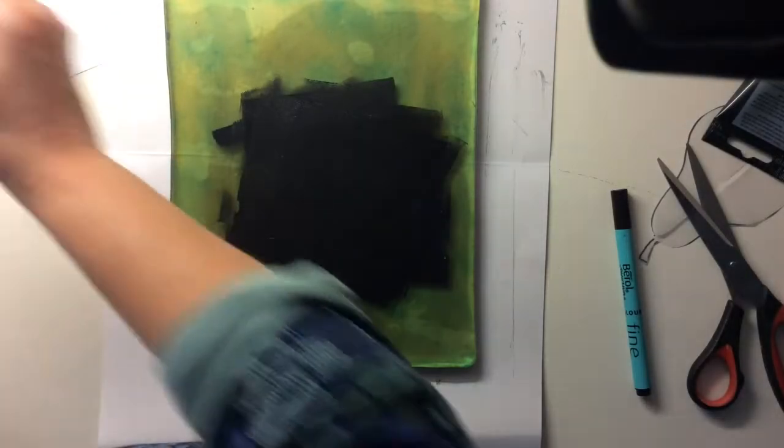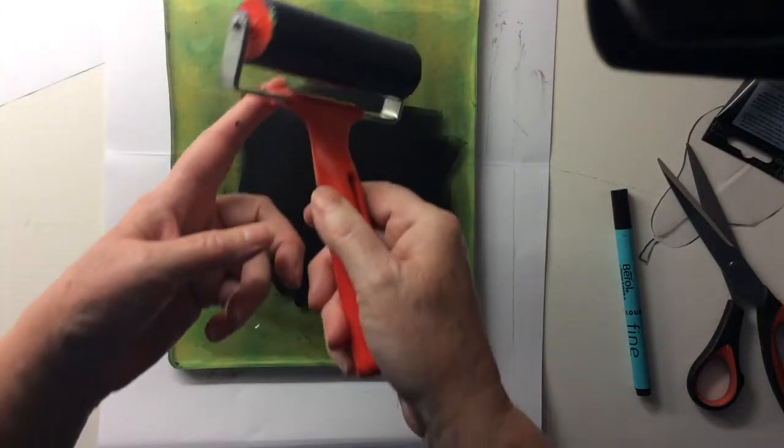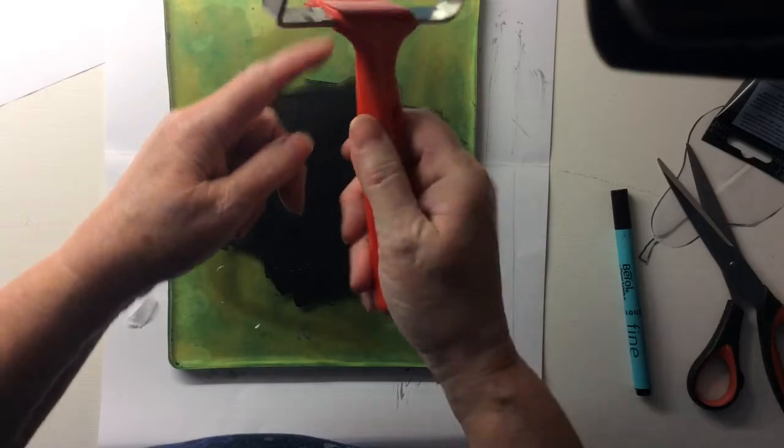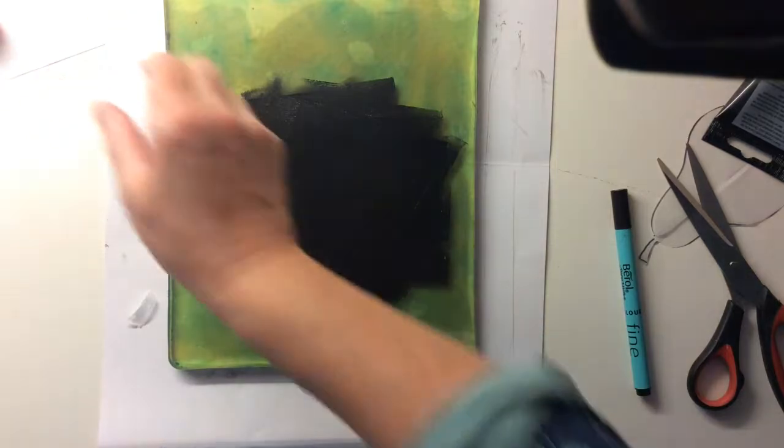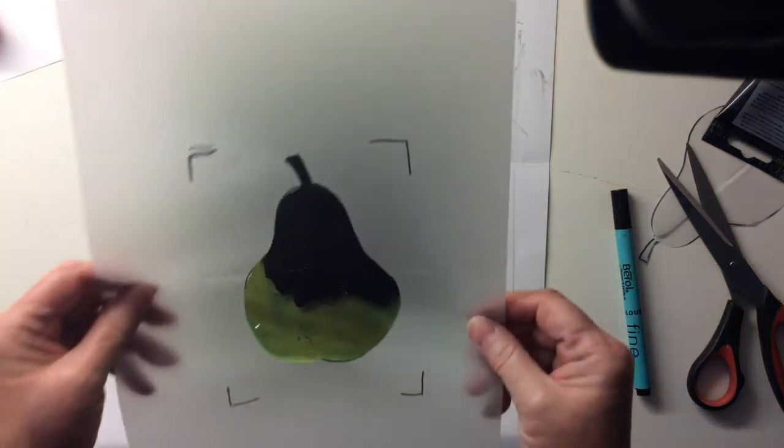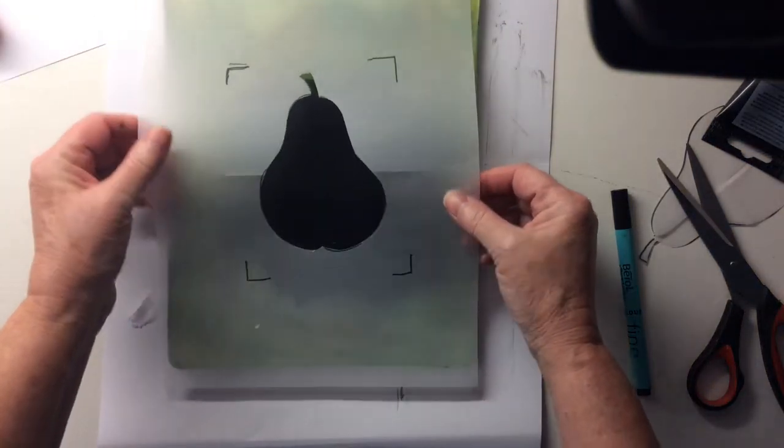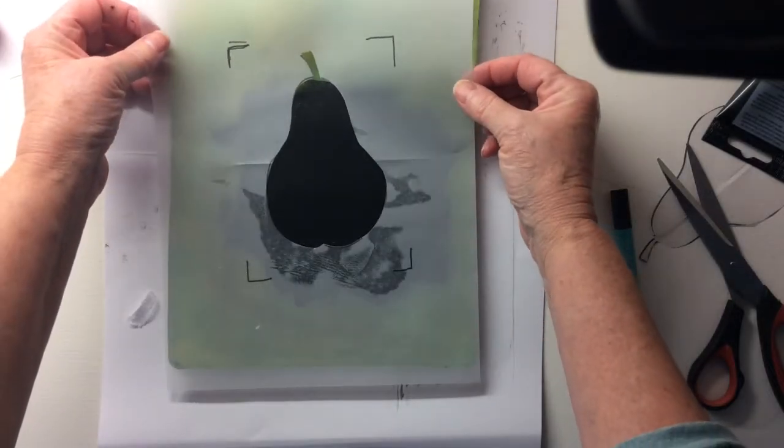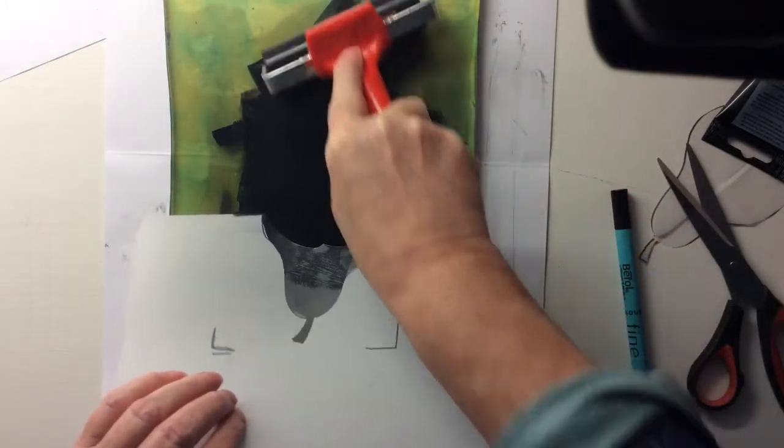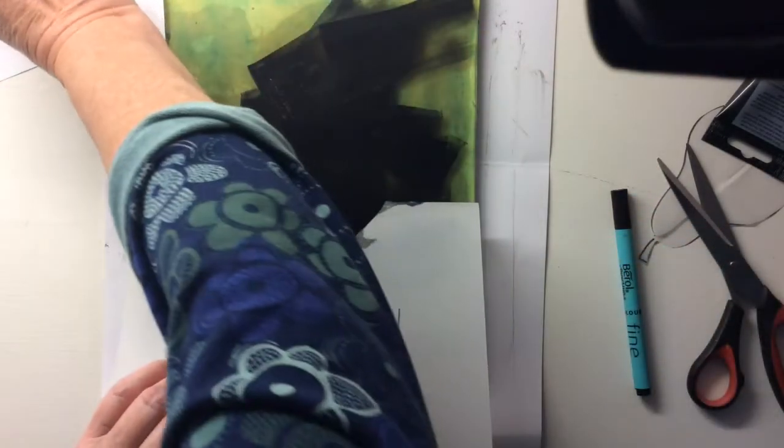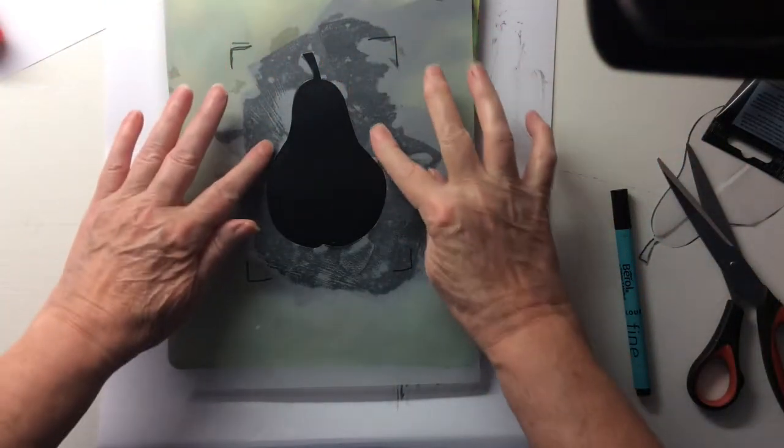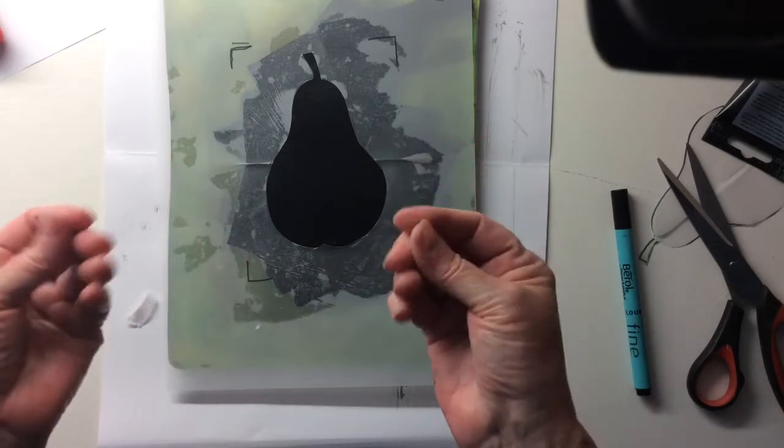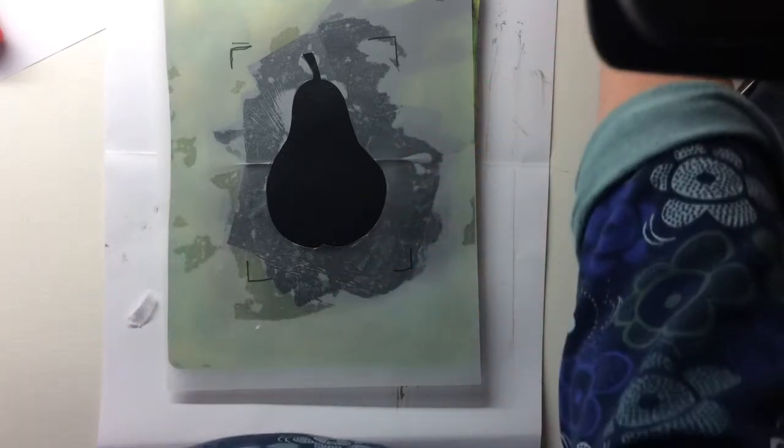Rollers have got a special lip here so that you can lay it down and the ink doesn't go on your table. Then carefully lay my tracing paper down, trying not to get any paint on my finger because if I get paint on my fingers then I'm likely to get paint on my paper.